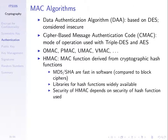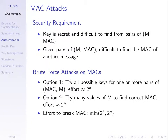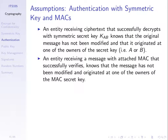Some names of MAC algorithms: OMAC, PMAC, CMAC, UMAC, VMAC, HMAC, and others — you don't need to remember them. The one you may see in practice is HMAC, which is based upon hash functions, which we're going to look at next. Rather than going through MAC algorithms in detail, let's summarize the assumptions we'll make about authentication: if we receive ciphertext and it successfully decrypts with key KAB, then we know the original message hasn't been modified, and it came from one of the owners of that key — A or B.